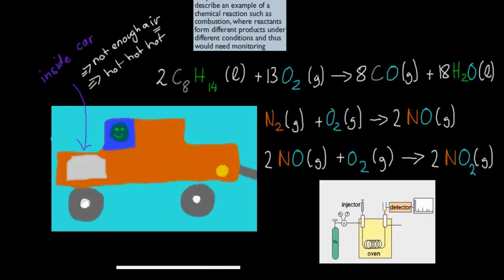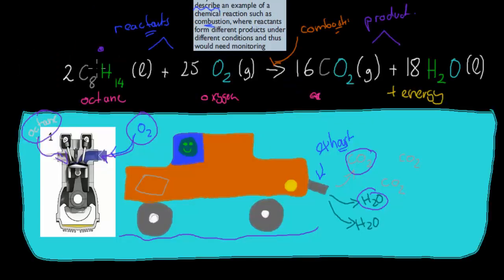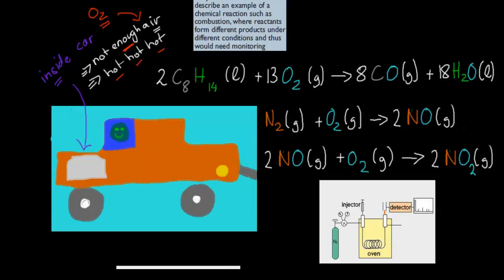Inside an actual car engine, it's a bit trickier. Inside the engine, there's not much air — it's quite tight in there — which means there's often not enough oxygen. And it's also really hot. Generally, an engine would be quite hot. The reason why that's a problem is that this reaction requires octane plus 25 moles of oxygen. We usually don't have that much oxygen — we usually have less. So here we have 13 moles instead of 25. This is more realistic — this is more how it actually is, as opposed to what we'd like it to be. So in our realistic engine, we have less oxygen, which can be a pretty big problem.